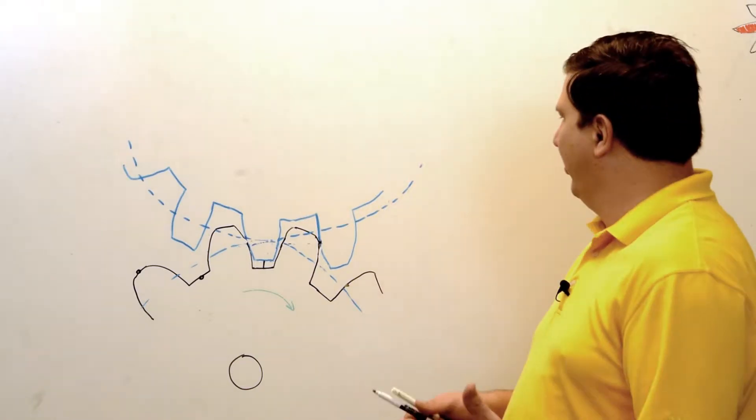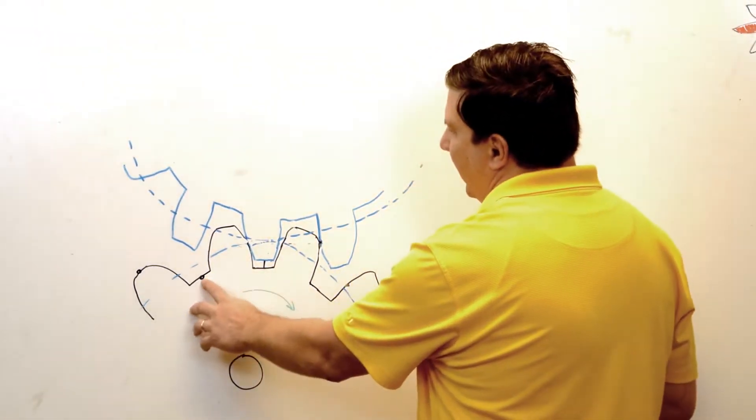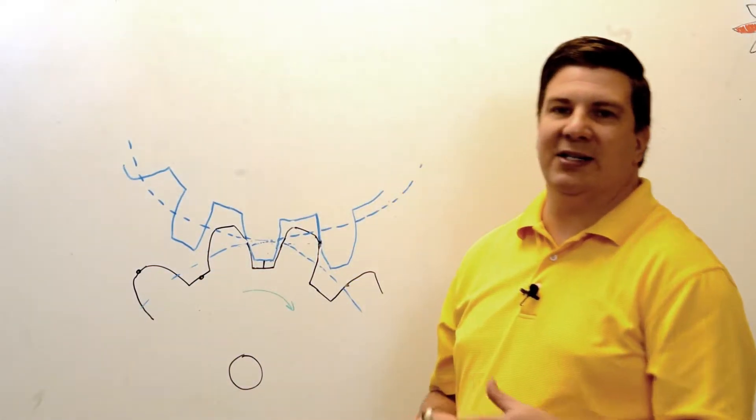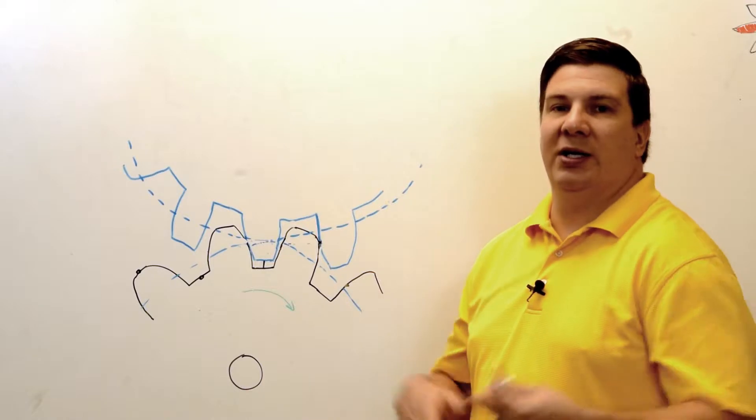The first thing I want to point out is these things called lands right here. This is a bottom land and a top land, and they're more or less a flattened section of our tooth.